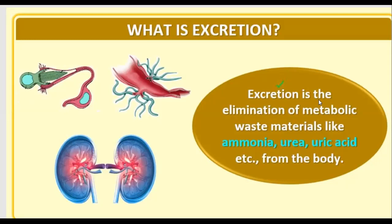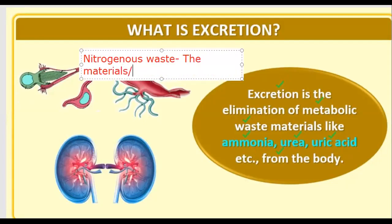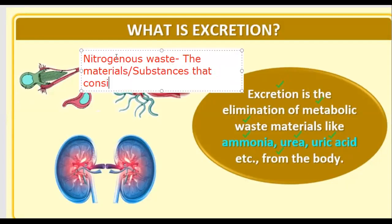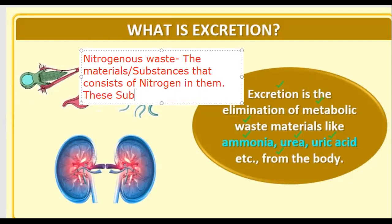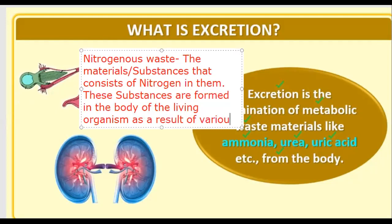Excretion is the elimination of metabolic waste materials like ammonia, urea, and uric acid from the body — basically the metabolic waste or nitrogenous waste. Nitrogenous waste means the materials or substances that consist of nitrogen in them. These substances are formed in the body of living organisms as a result of various metabolic activities.